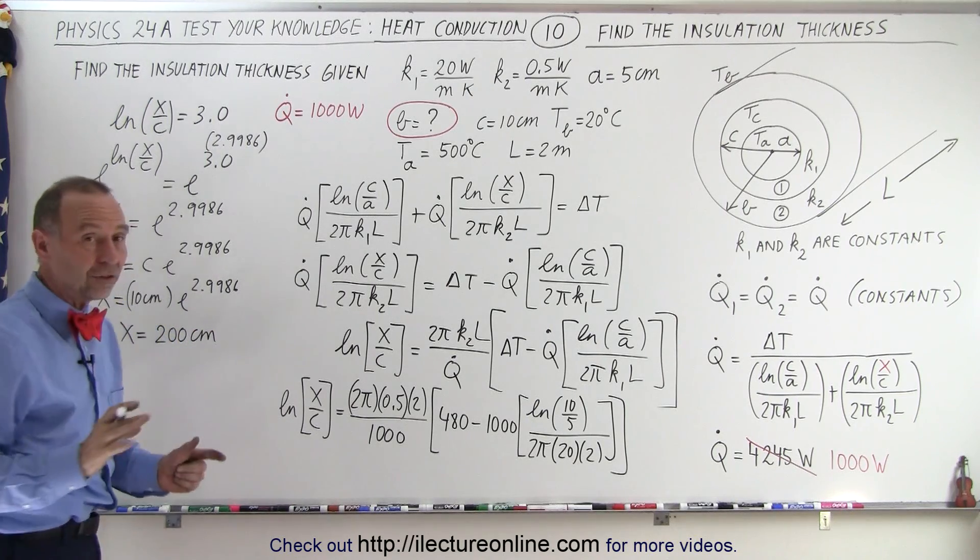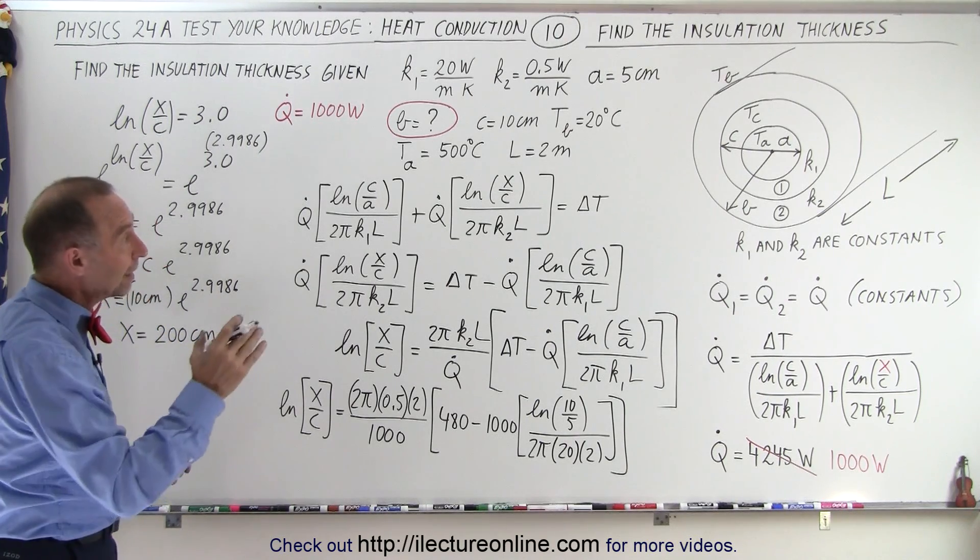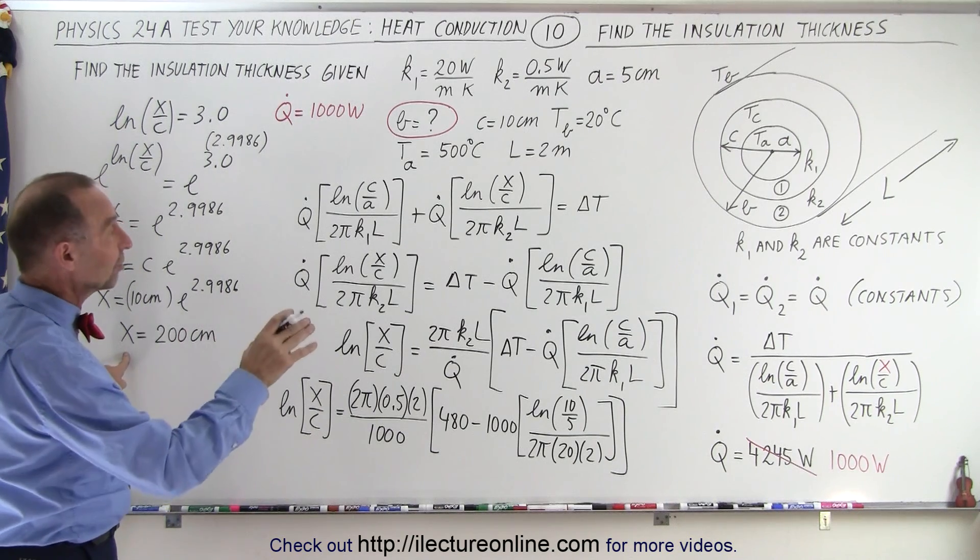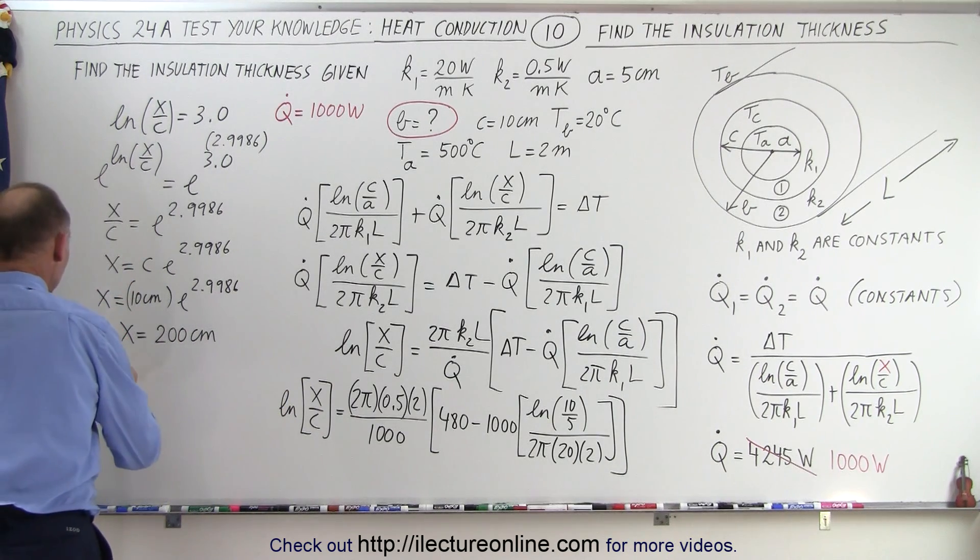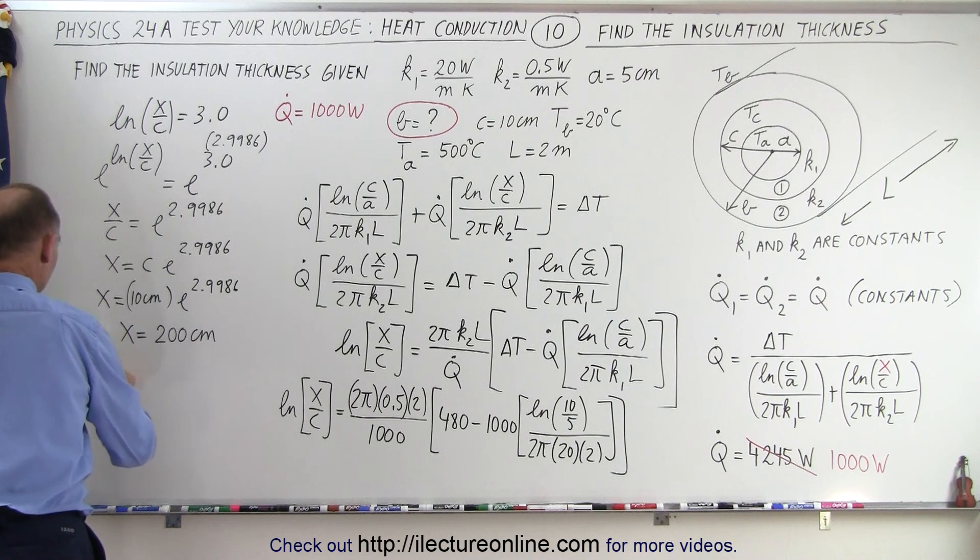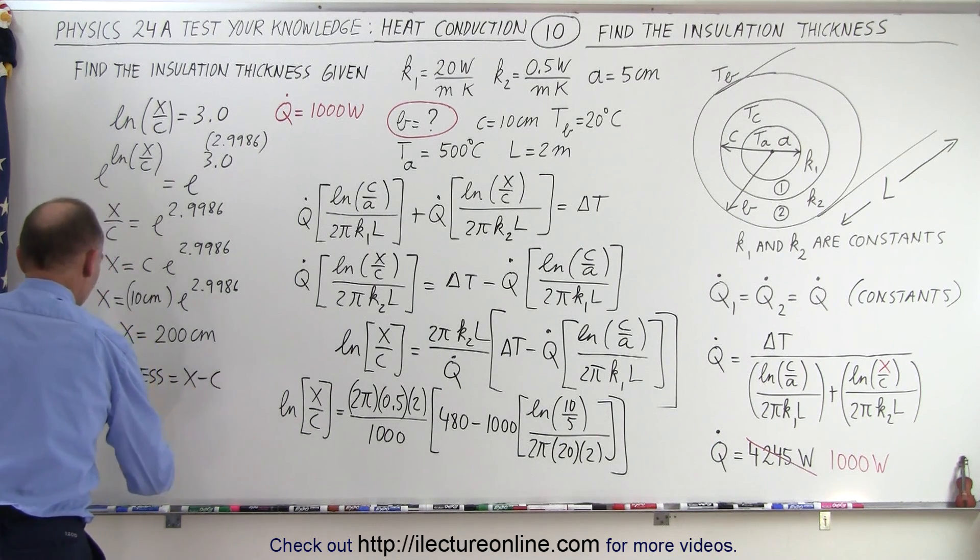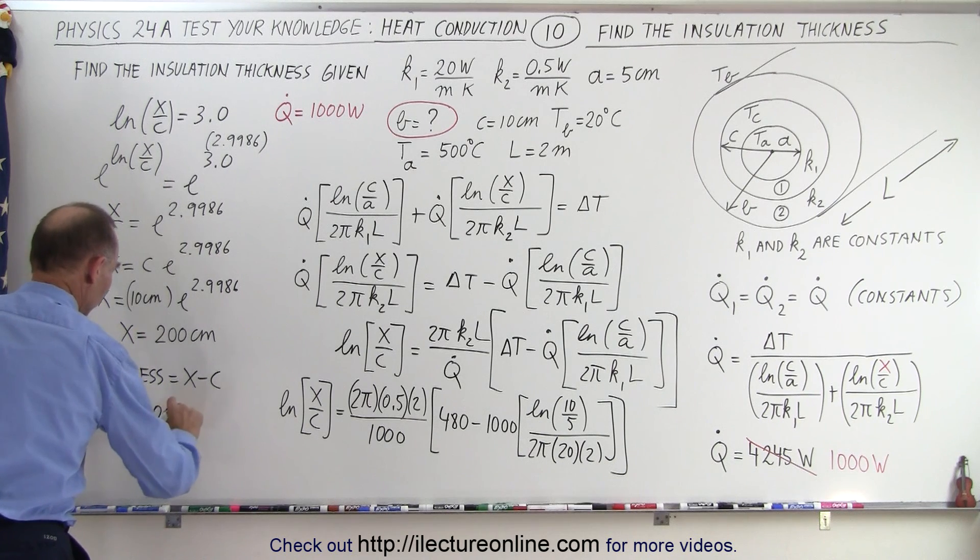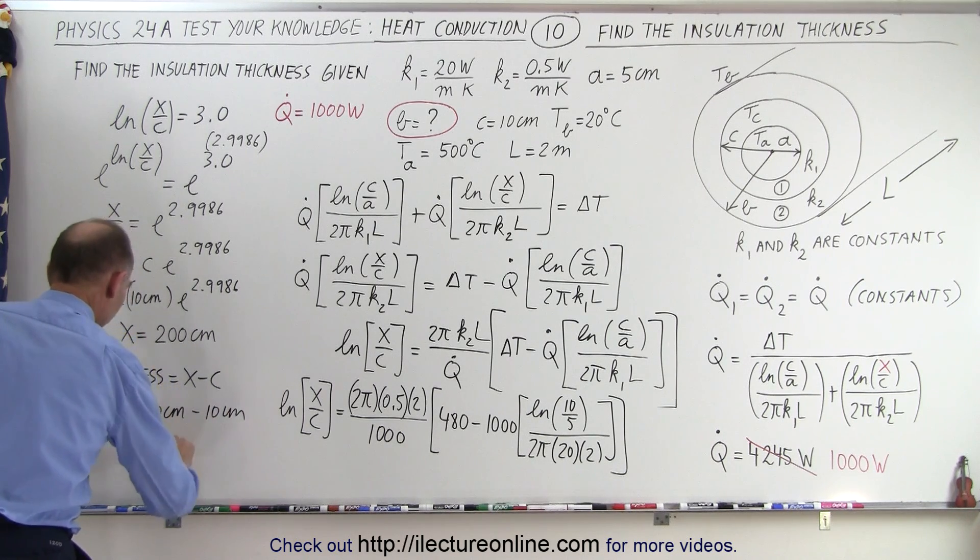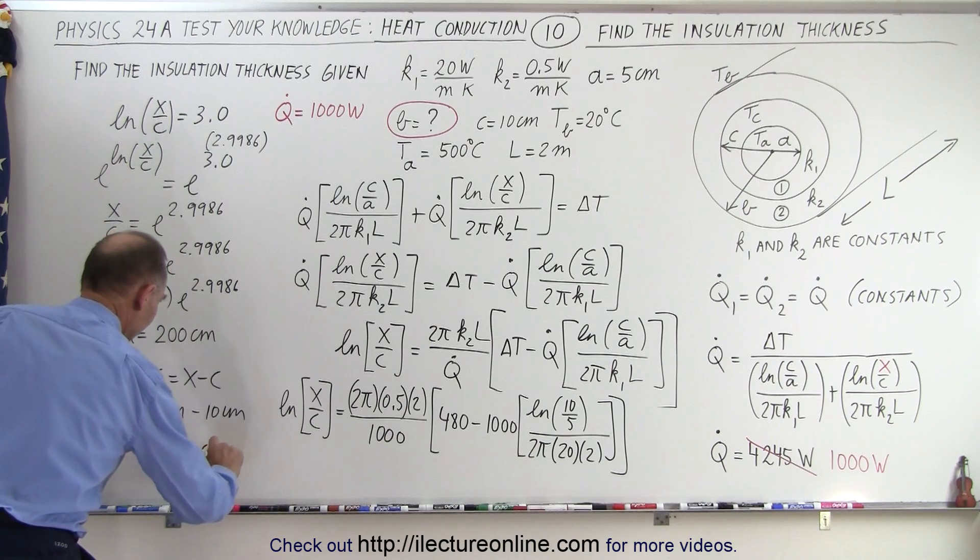So, how thick does our insulation layer need to be? Well, if b, which is x, is 200 centimeters and c is 10 centimeters, that means the thickness, the thickness is equal to x minus c, which is equal to 200 centimeters, minus 10 centimeters, which is equal to 190 centimeters.